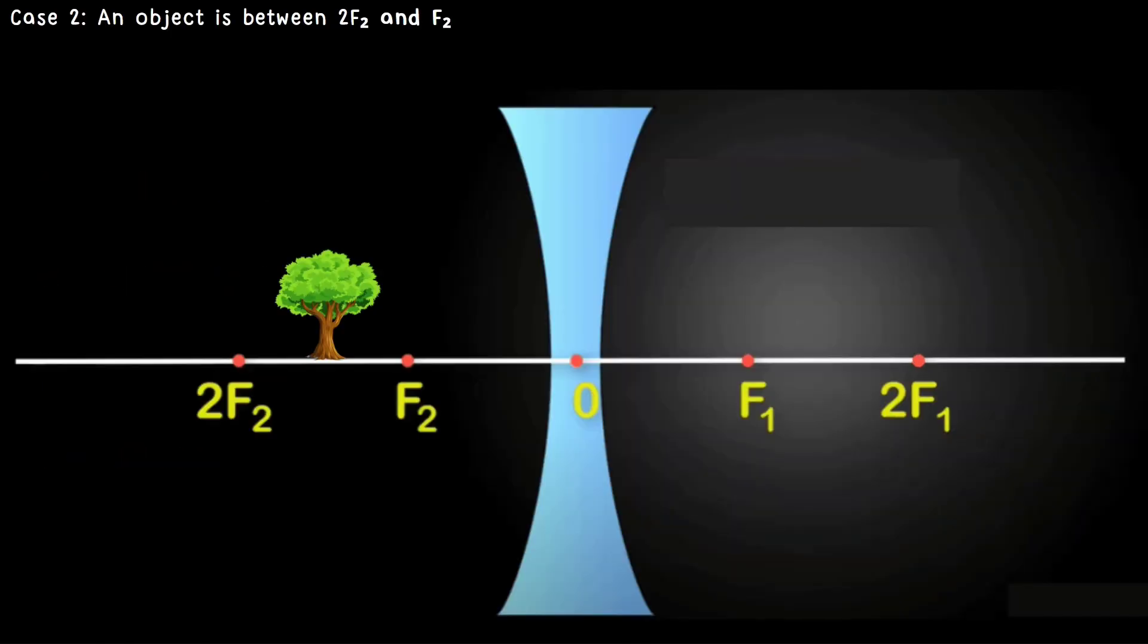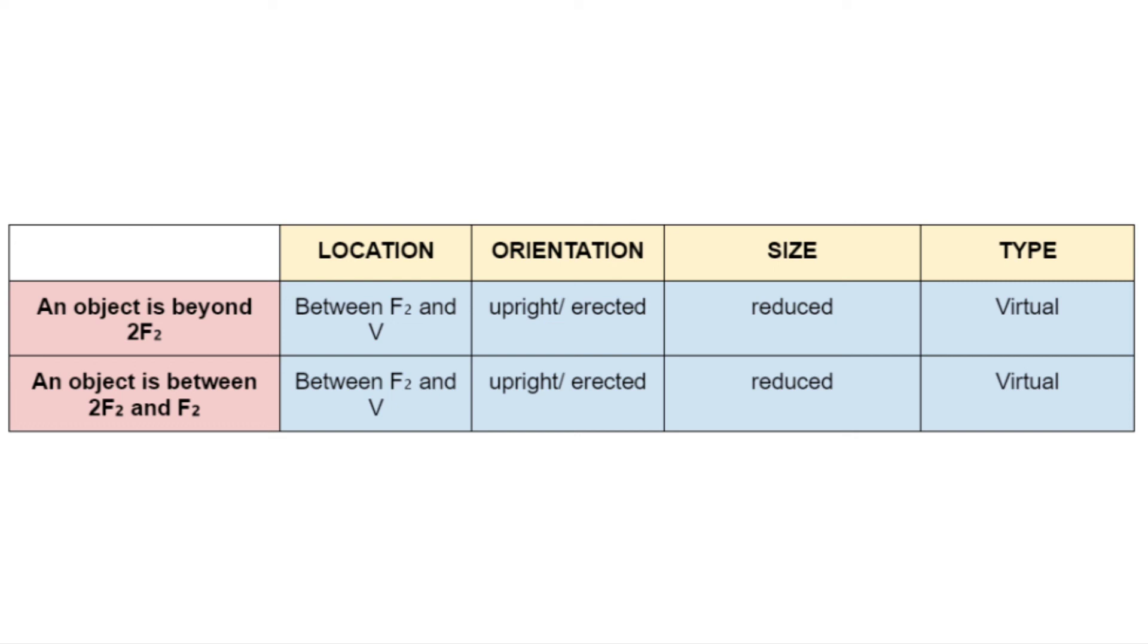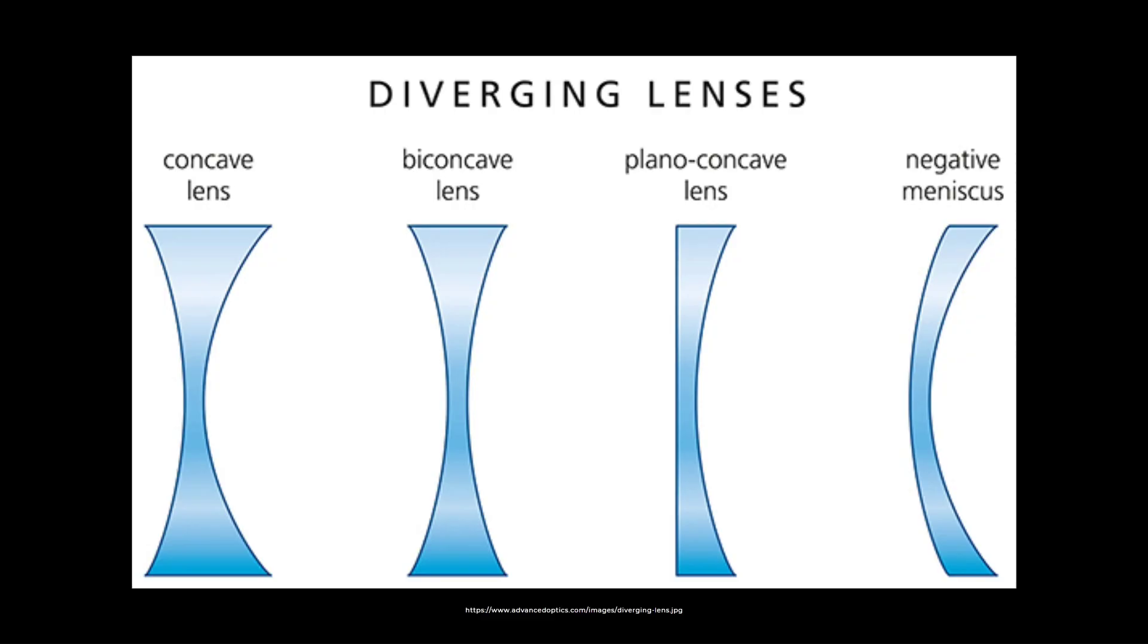Next case is if an object is between 2F2 and F2. Same process, watch carefully. If you notice, an image formed since there was an intersection. The location of the image is between F2 and the vertex, and the orientation is upright. The size is reduced and the type of image is virtual. In our concave lens, if you notice, all of them have the same properties. But is the answer the same for all kinds of concave lenses? The answer is no because it depends upon the shape of the concave lenses. We have plano concave and negative meniscus.